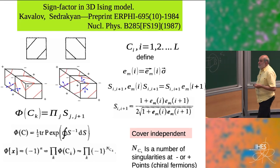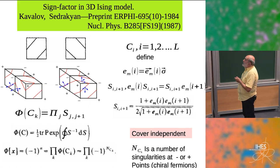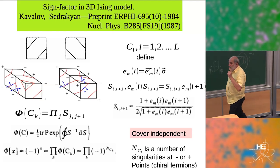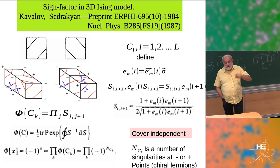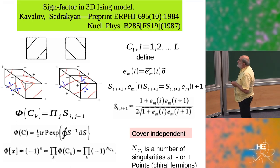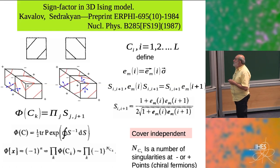Now on each curve, define the following object. We have a number of curves covering the surface, and the number of coverings is 2^A because on each plaquette we have two ways. On each curve, you can define three basic vectors: E1 and E2 tangent to the surface but normal to the curve, and the third one normal to the surface.